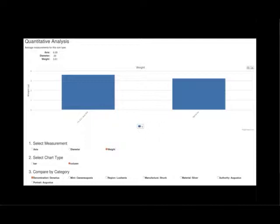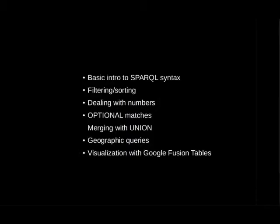In this presentation, I'll go through many different types of SPARQL queries that we use to build these visualizations. I certainly can't get through the entirety of SPARQL, but the idea is to start fairly simply and then build in complexity. I'll cover basic SPARQL syntax, filtering and sorting, dealing with numbers such as averages and counts, using OPTIONAL to match things, merging different queries with UNION, geographic queries, and then dropping CSV exports from these SPARQL queries into Google Fusion Tables for visualization.